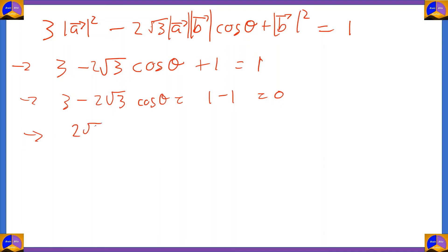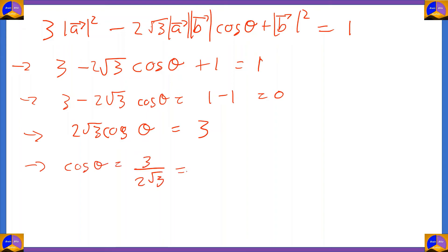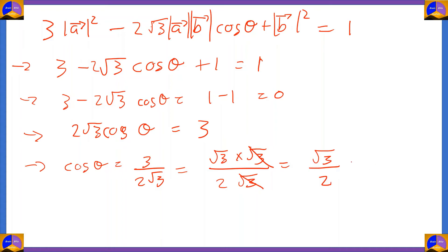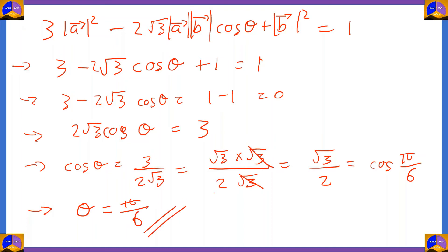Let's find the value of cos θ. Cos θ = 3/(2√3) = (√3·√3)/(2·√3) = √3/2. Now √3/2 is the value of cos(π/6), so θ = π/6. The angle between vector a and vector b is π/6, or 30 degrees.